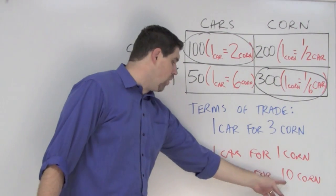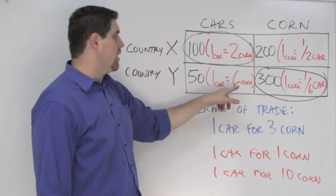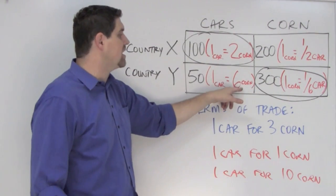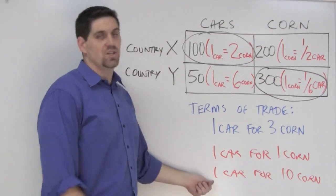Well, they'd have to give up ten corn to get one car. Now, they're producing corn already. In this situation, if they produce it themselves, they'd give up six corn and they'd get a car. Why would they want to trade and give up ten corn to get just one car?